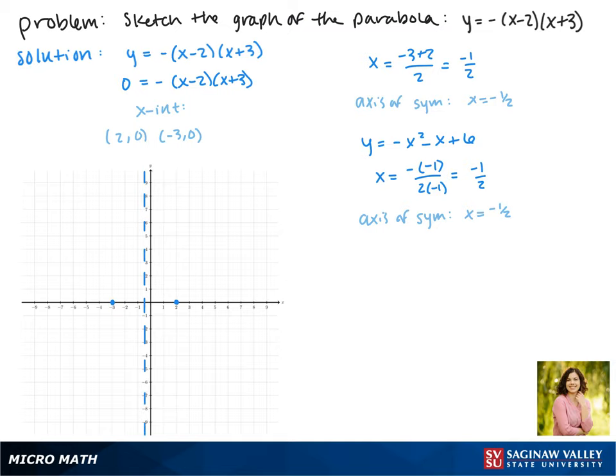Now to find the y value of the vertex, we're going to plug x back into our equation, and it's perfectly fine to use either equation—the one we were given or the one where we distributed everything out. Both of them will give you the same answer of y = 6 and 1/4. This makes our vertex the point (-1/2, 6.25). On our graph it is here.